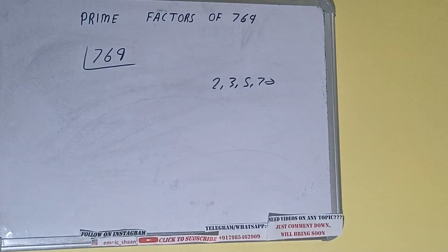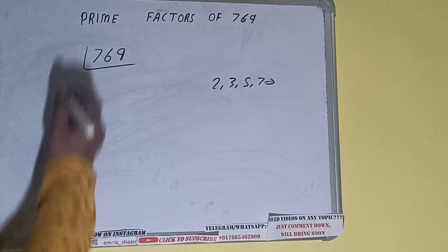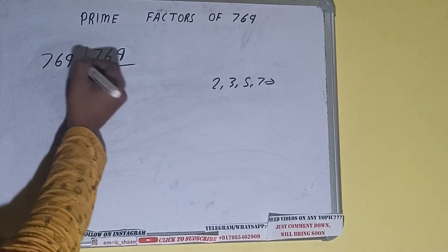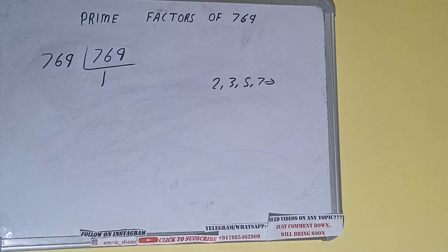Alright. So if we talk about the number 769, the number 769 is also a prime number. So it is only divisible by itself, that is 769, and once we do so we will be getting 1.